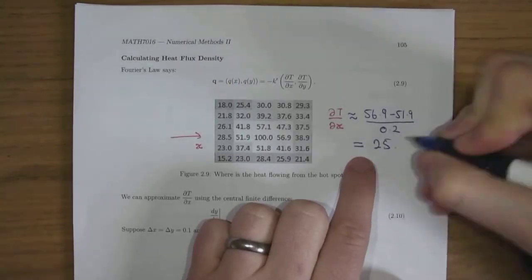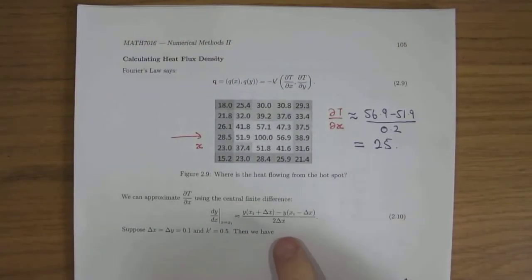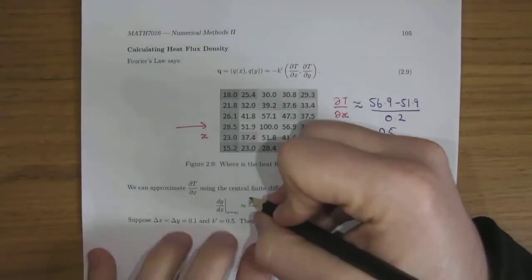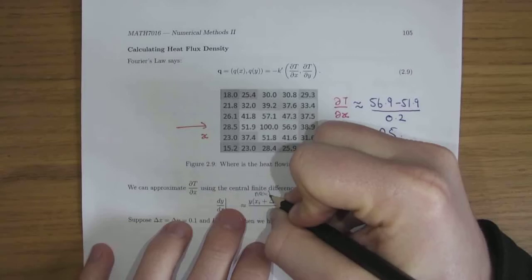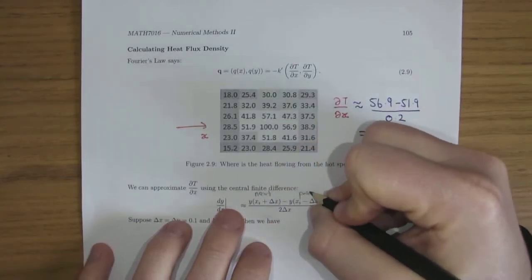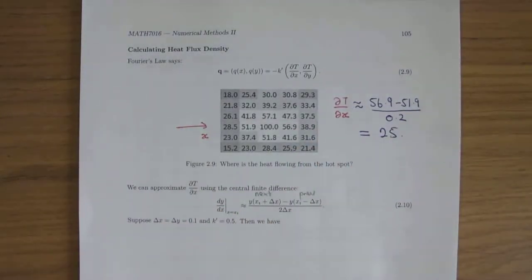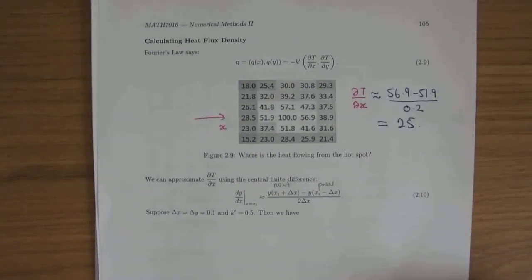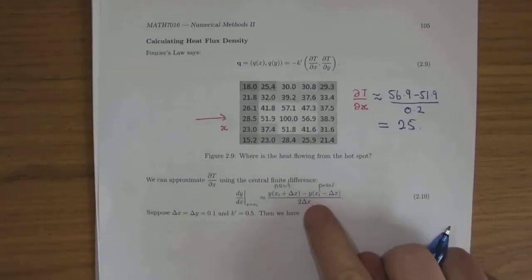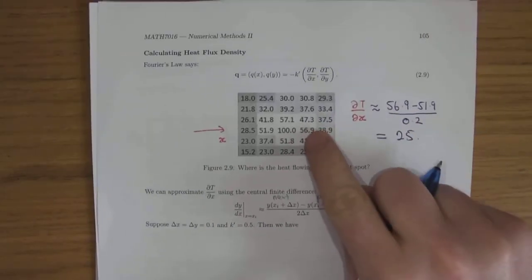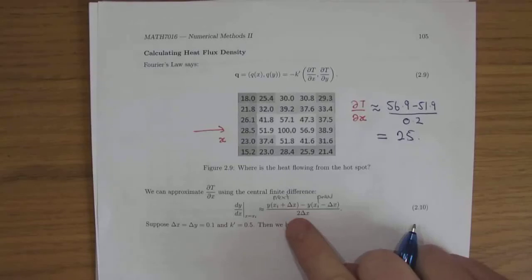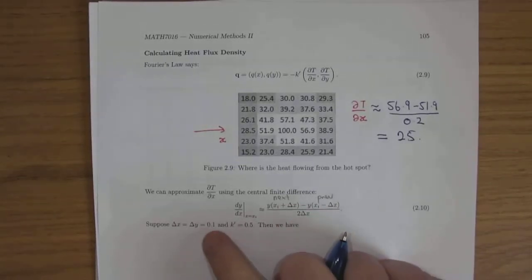That's the easy way to rise over run slightly harder, is using this little formula, and in this little formula, this is like next, and this is previous, and current is not involved, basically. So you can do it this way, so because you see 56.9 is next, 51.9 is previous, divided by twice delta x. Delta x, we're taking to be 0.1.